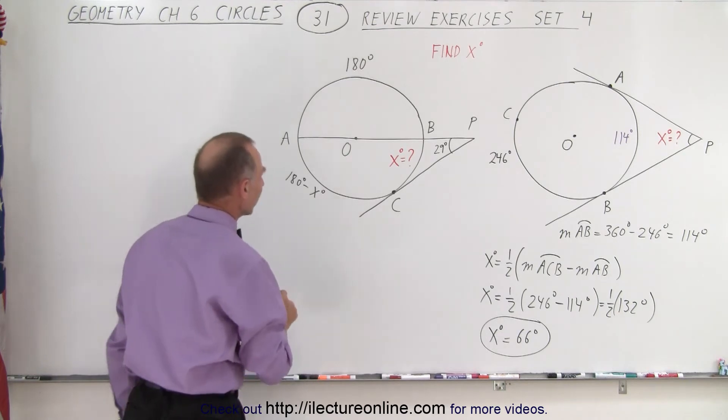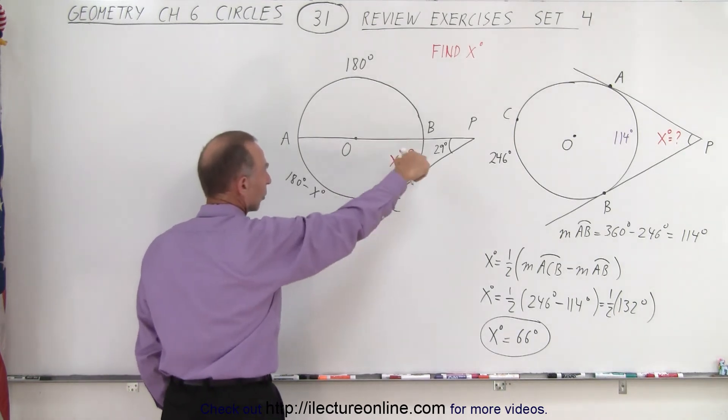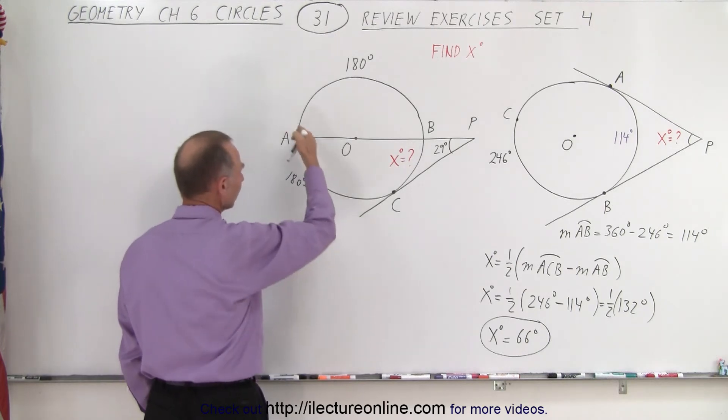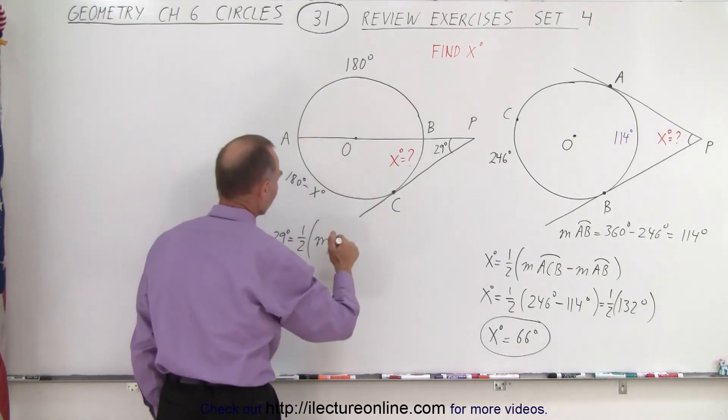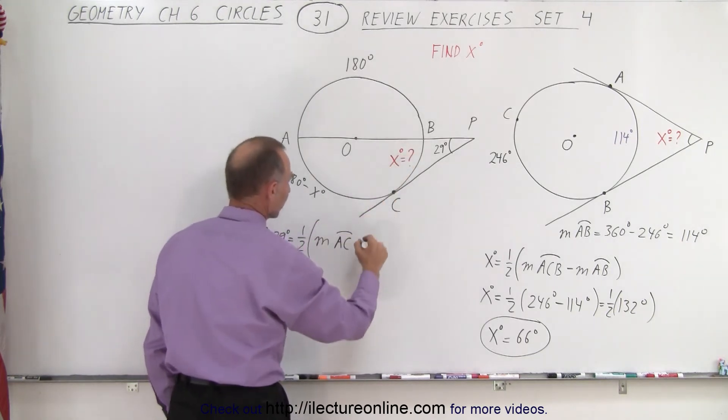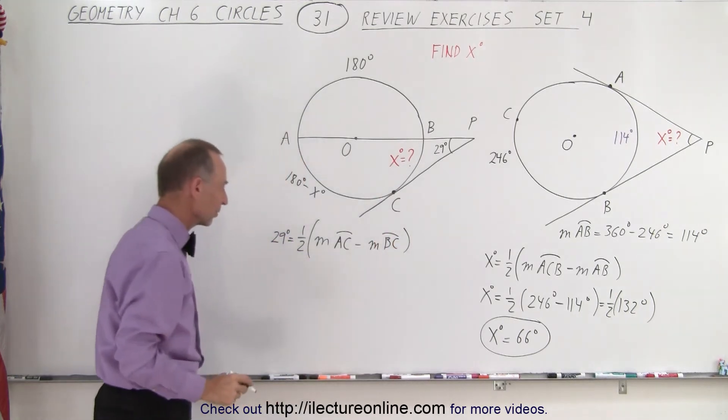And this value right here would be 180 degrees minus x degrees. So, now we can say that the measure, or the 29 degree angle, we can simply say the 29 degree angle is equal to one half the measure of the outside arc, which is the measure of A to C, like this, minus the measure from B to C. That's the best way to write it.